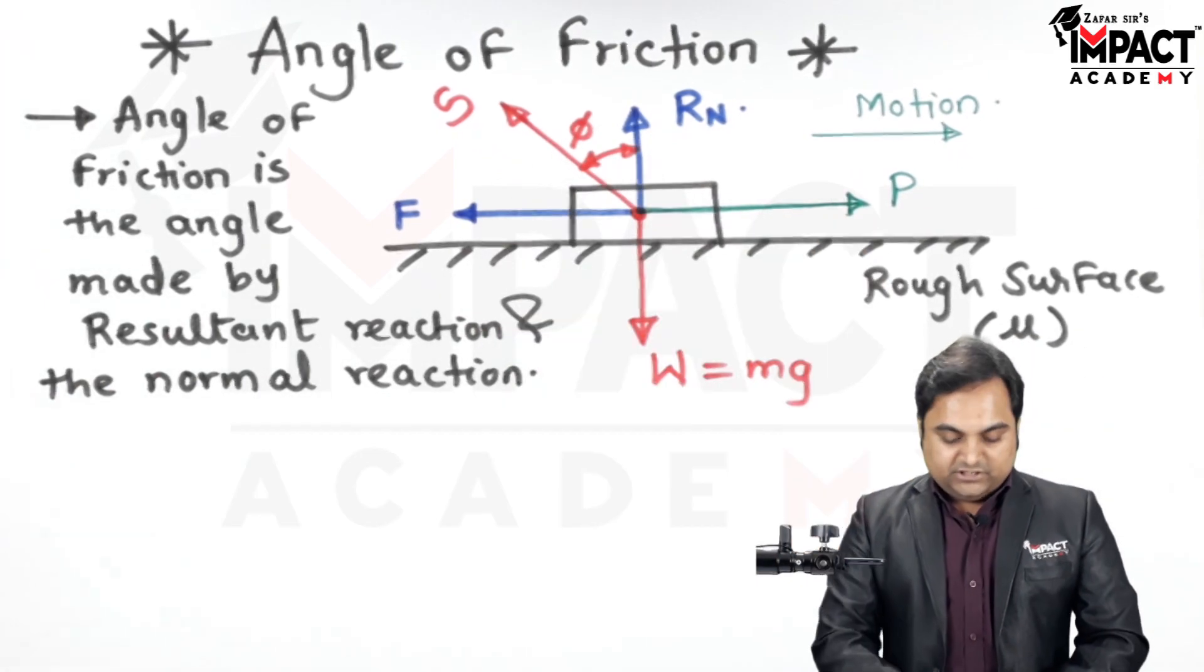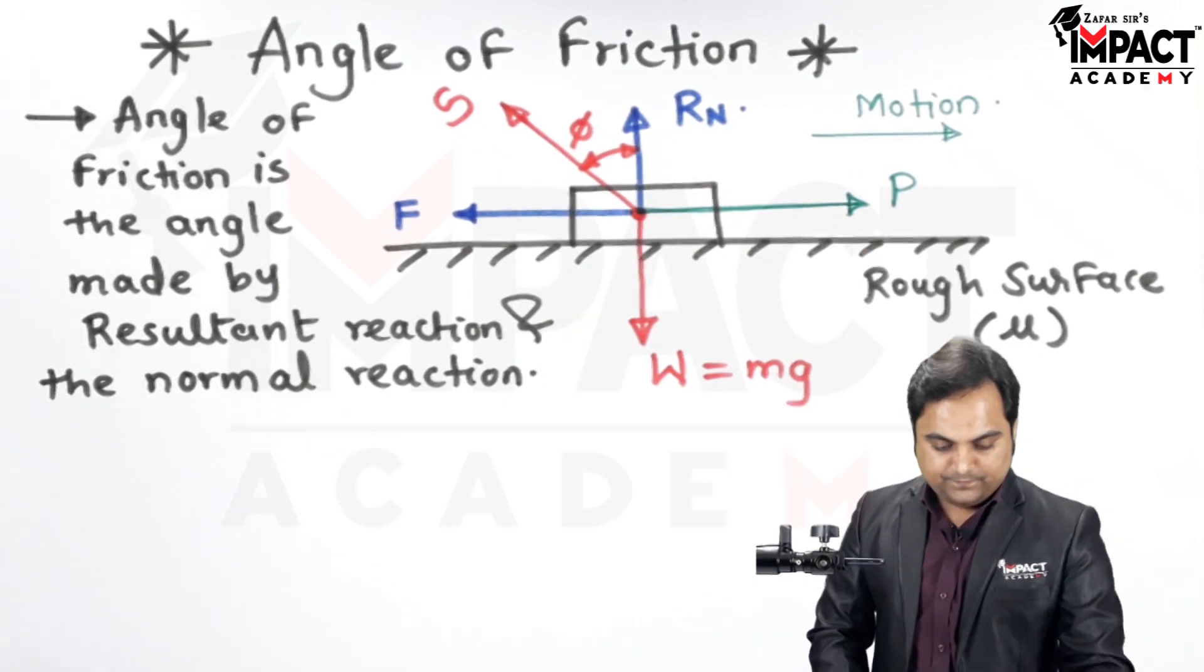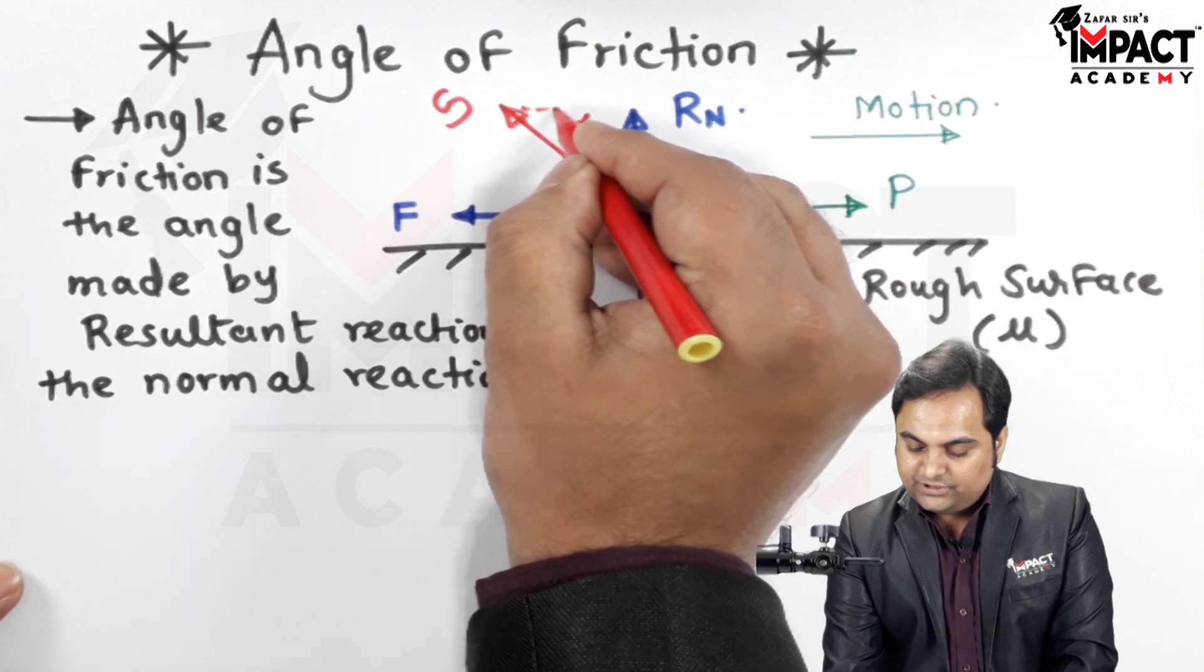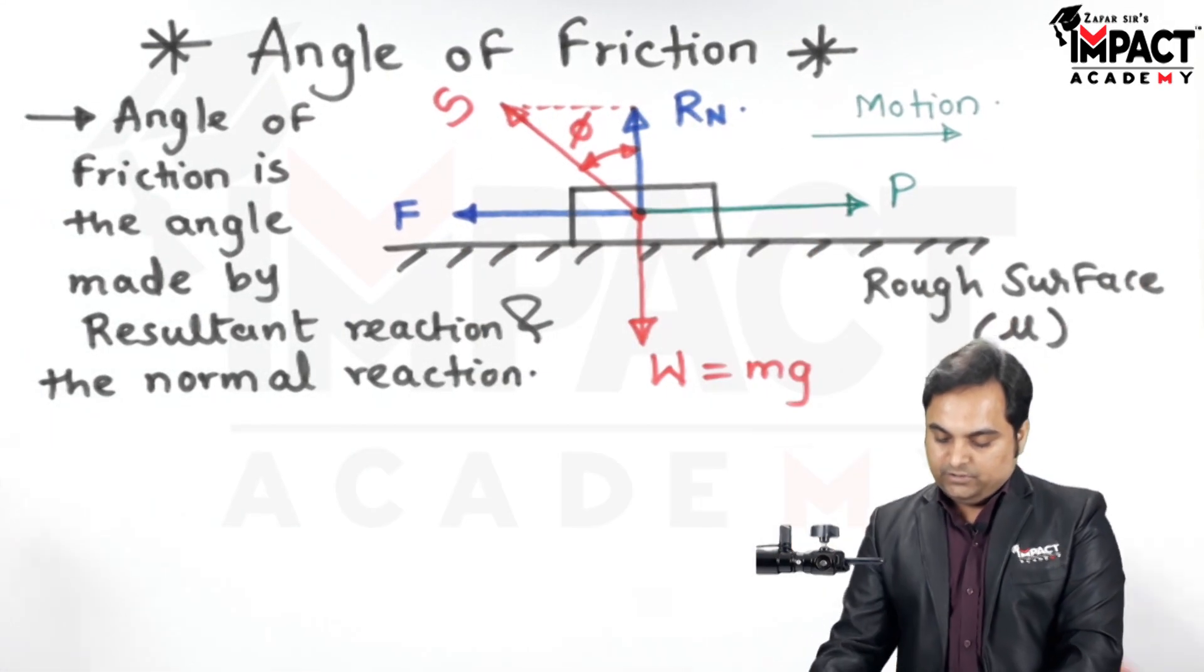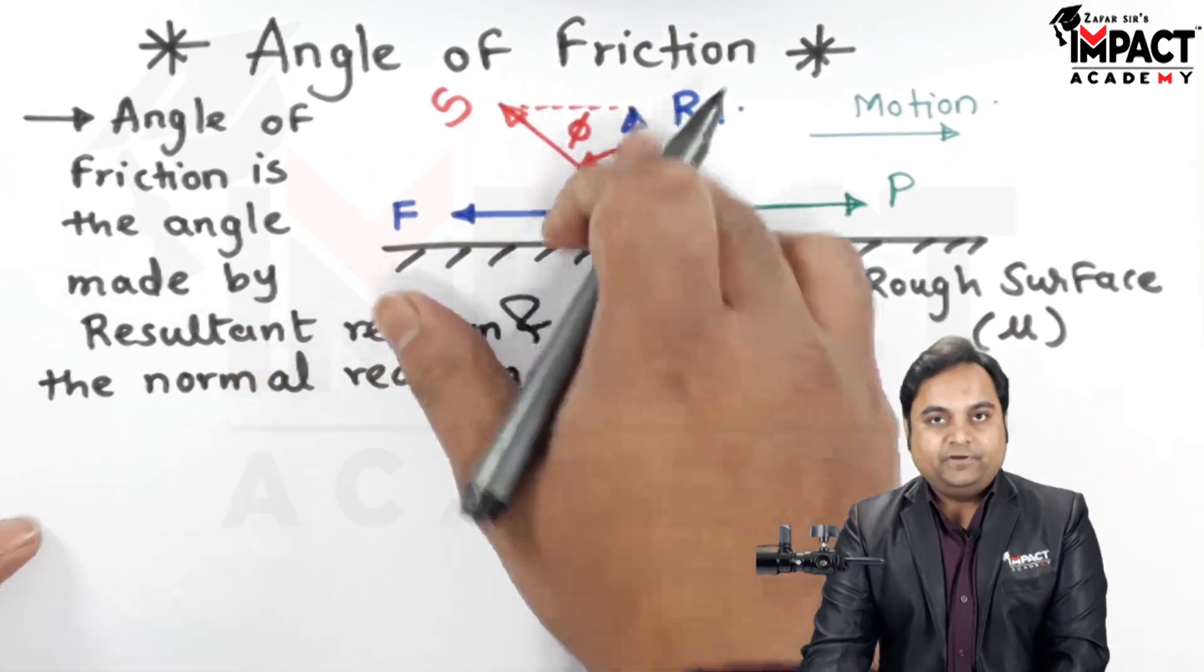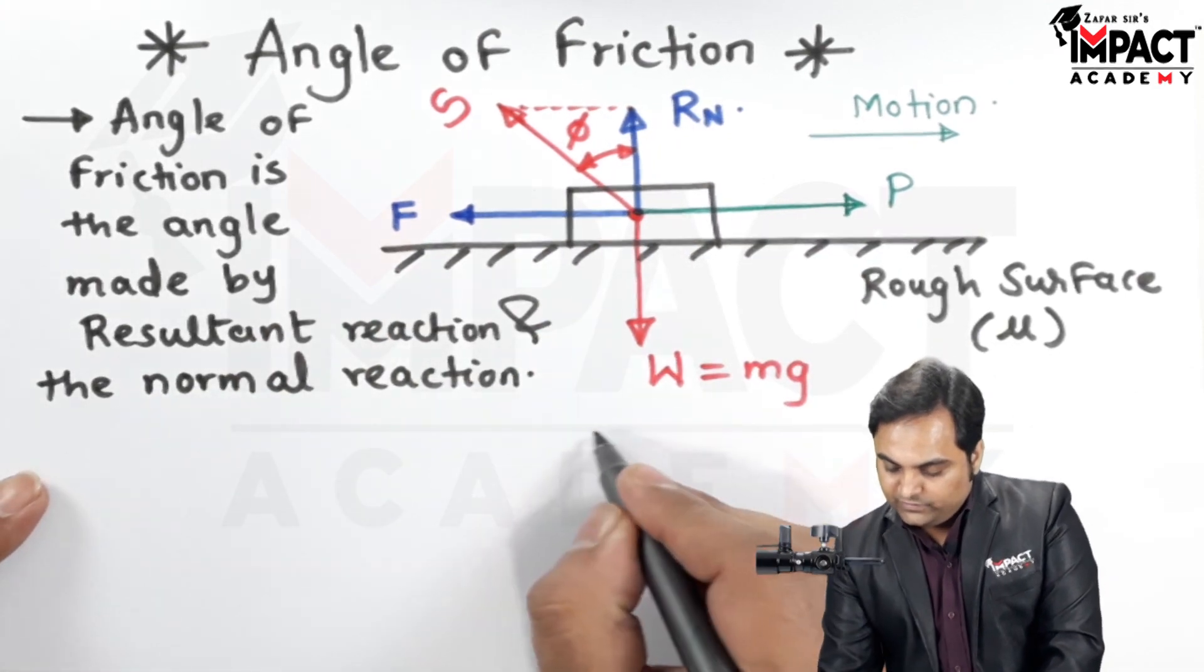So now in order to get this value of phi I am just projecting a line here joining S and R and I am separating this triangle. So when I separate it.